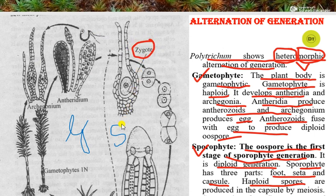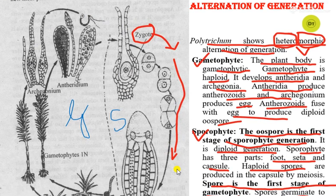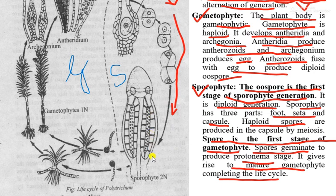With the formation of the zygote, there is the beginning of sporophytic generation. The zygote will develop into an embryo, the embryo will develop into a sporophyte, and the sporophyte will produce spores. With the formation of spores, the sporophytic phase ends. The spores will be liberated and germinate to produce protonema. The protonema will mature to form gametophytes and the cycle will continue this way.